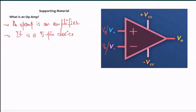The op-amp takes a small signal and makes it bigger. Physics says there has to be some energy input for this work — that energy comes from VCC: the positive VCC and the negative VCC. So the op-amp has two power supplies, which can range from positive/negative 5 volts up to positive/negative 22 volts.